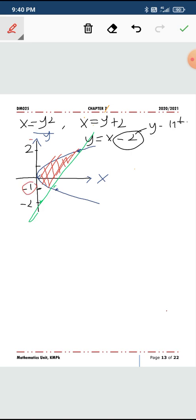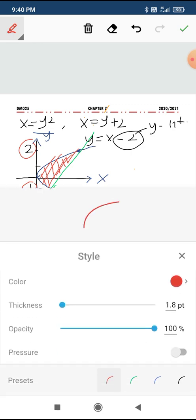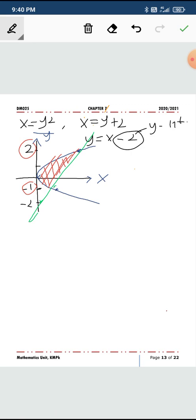To find the area, the area A is given by negative 1 to 2, which is the top most function. You have to be careful. Since we are going to integrate with respect to Y, the top most function. I don't think we have enough space here. Let me shift this a bit.